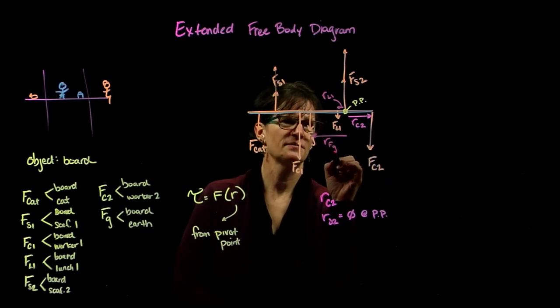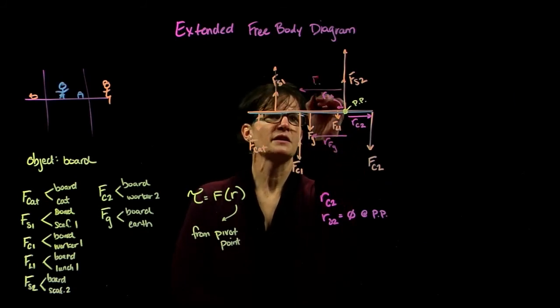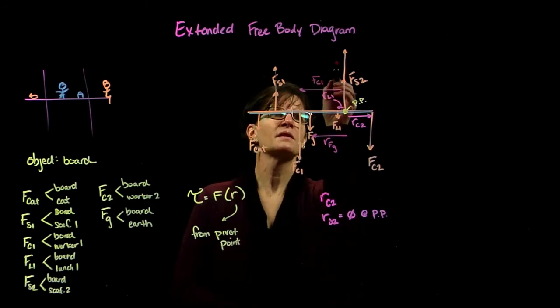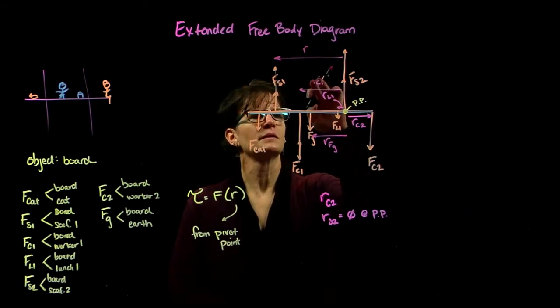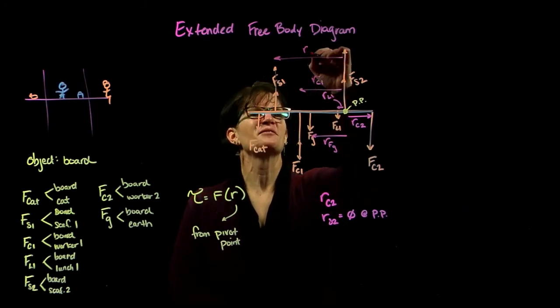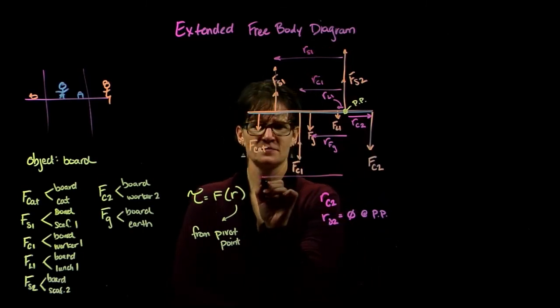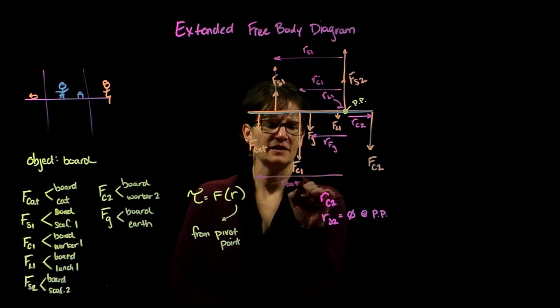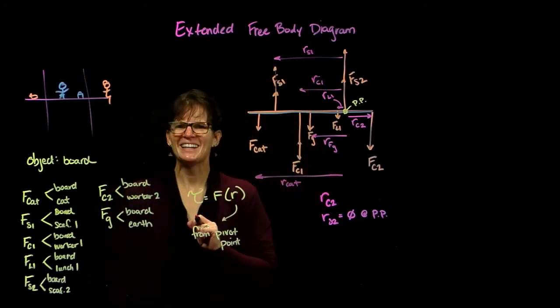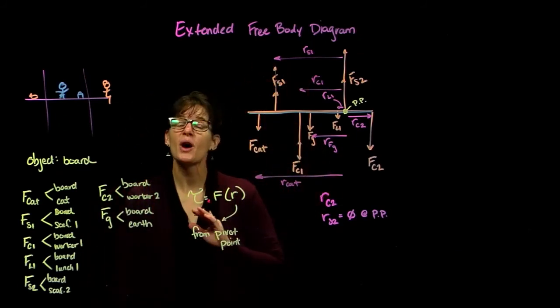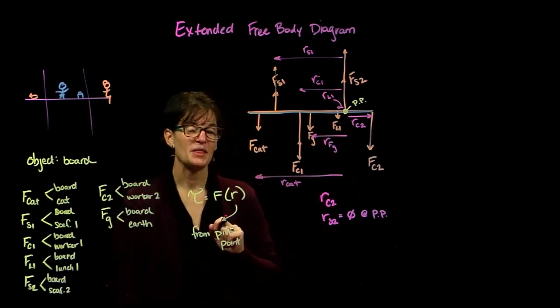The radius for the force of gravity, the radius for construction worker number one, the radius for scaffolding number one, and the radius for the cat. So all radii are represented on our extended free body diagram referencing that pivot point.